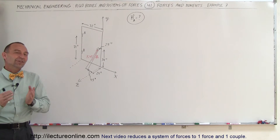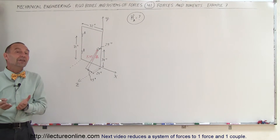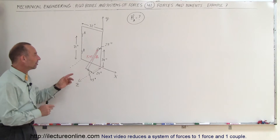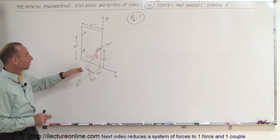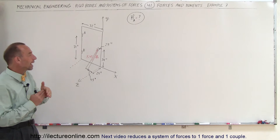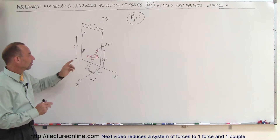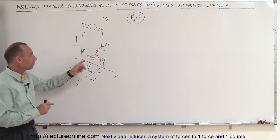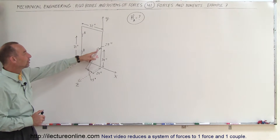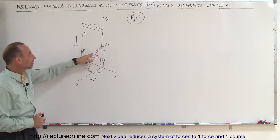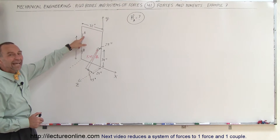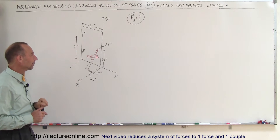Welcome to ElectronLine. Here's our next example of how to find a moment. In this case we have a door that is being held by a piece of wood stuck underneath the door handle. The piece of wood is pushing back with a force of 45 pounds, and we want to find the moment caused by this force relative to point A — one of the hinges of the door.